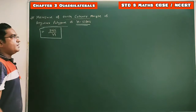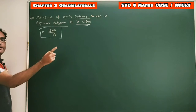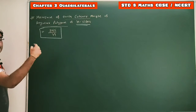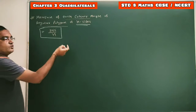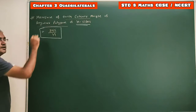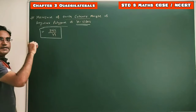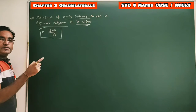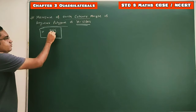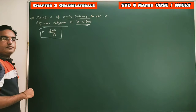The measure of each exterior angle is given by the formula 360 by n. The angle sum property of exterior angles states that the sum of all exterior angles of a polygon, irrespective of the total number of sides, is always equal to 360 degrees. So the measure of each exterior angle is equal to 360 by n.